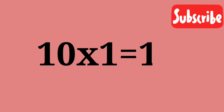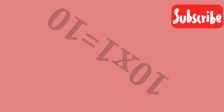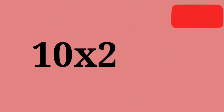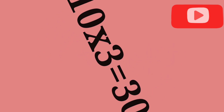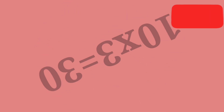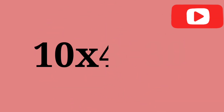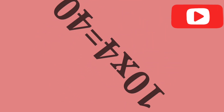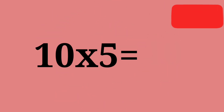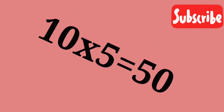Table of 10. 10 ones are 10. 10 twos are 20. 10 threes are 30. 10 fours are 40. 10 fives are 50.